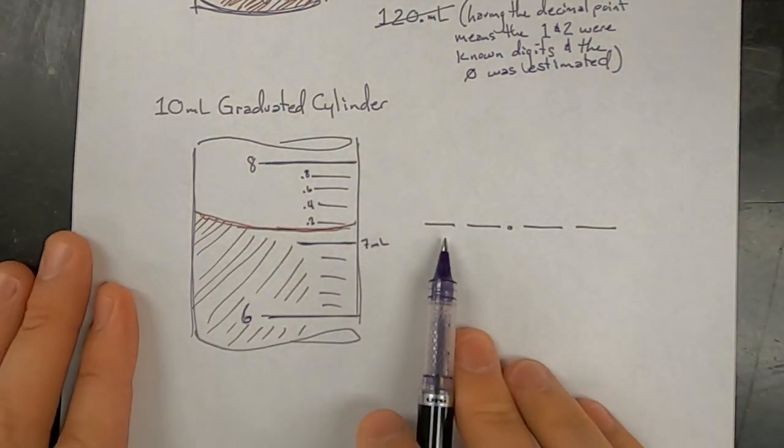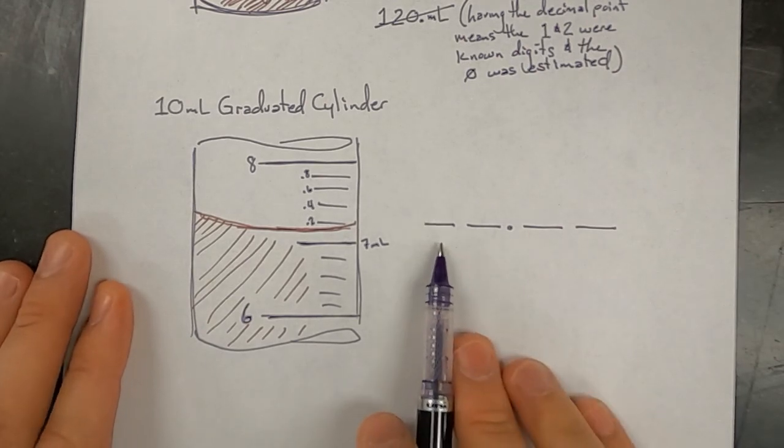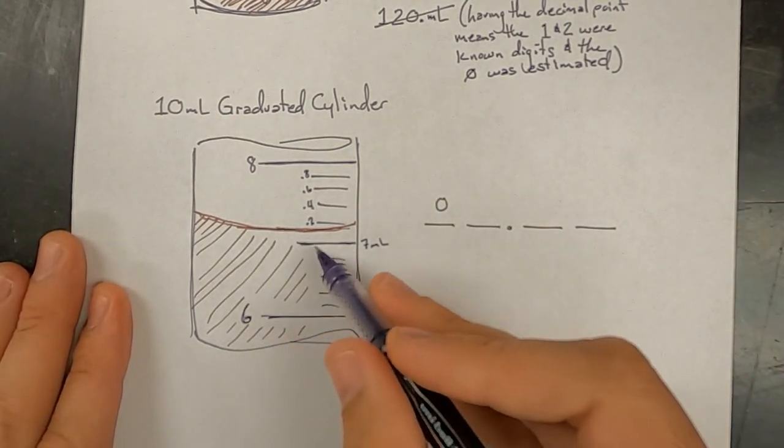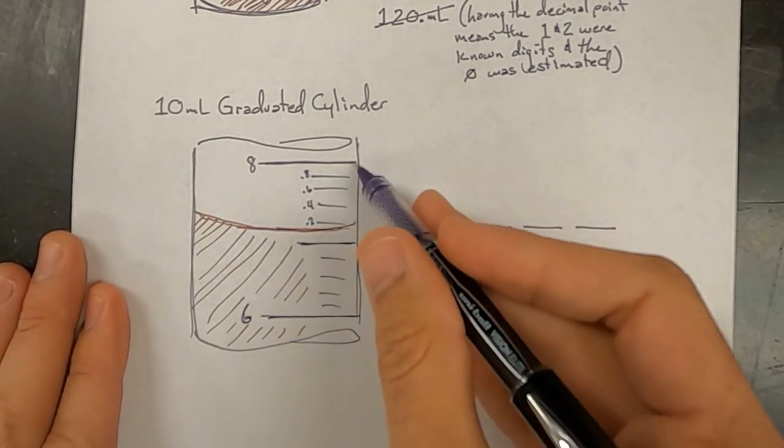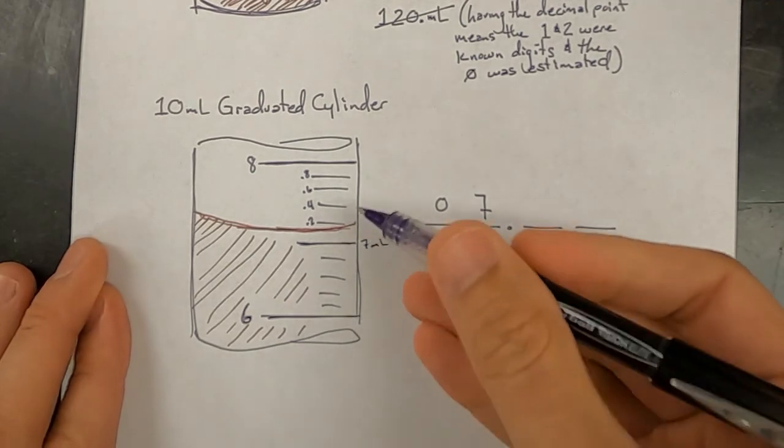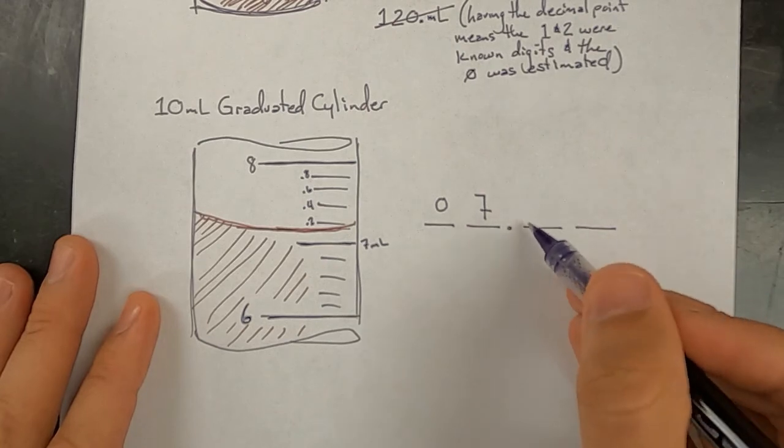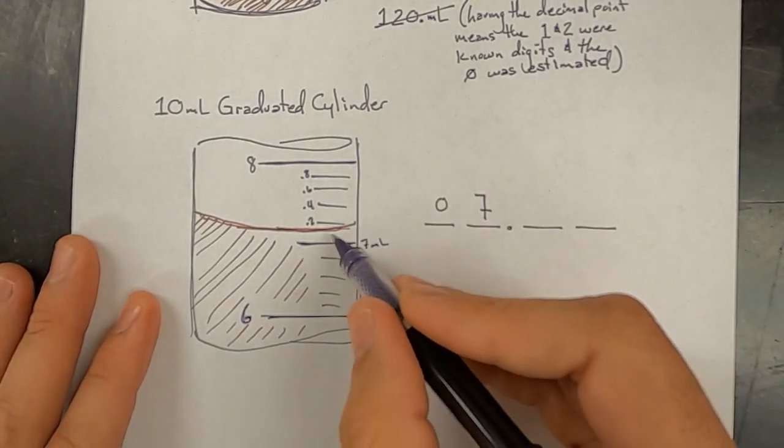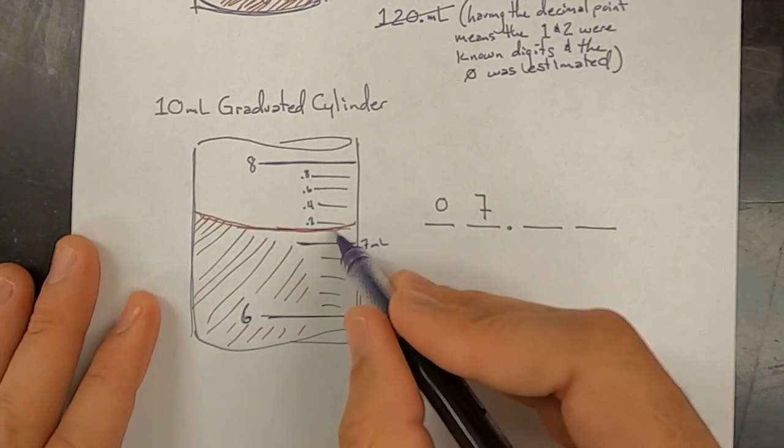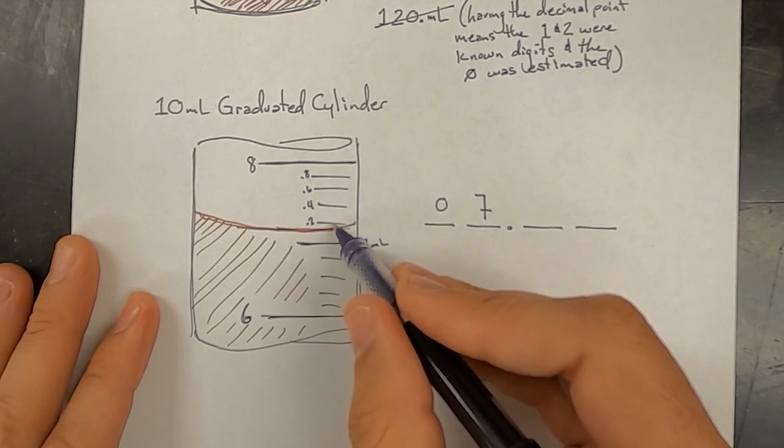So we'll look at our place values to decide what is known and what's estimated. Definitely not up to the tens place yet. So that has to be a zero. Now we can see that the meniscus is definitely between the seven milliliter and eight milliliter mark. So for the ones place, it is definitely a seven. The tenths place, this is where it gets tricky. Each of these marks is not worth one tenth. And so that means this will be our estimated digit. So we need to think, is it closer to the zero mark for the seven? Is it closer to right in between where it would be 7.1? Or is it closer to 7.2? All of those would be valid measurements in this case.